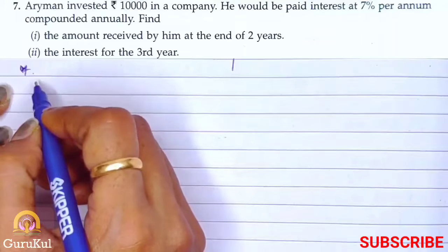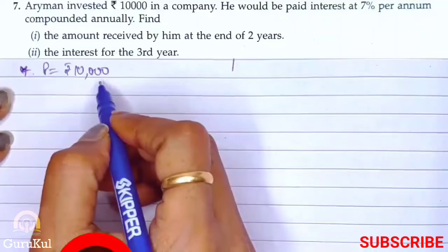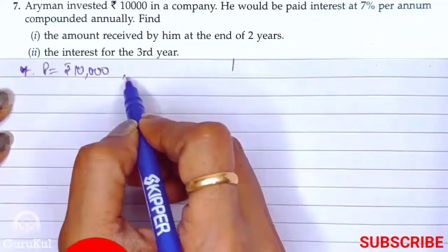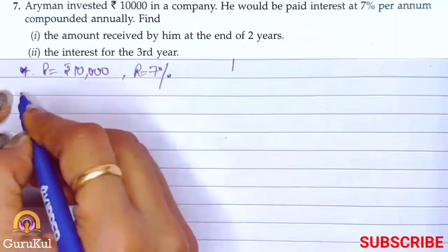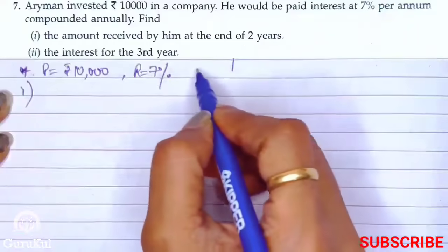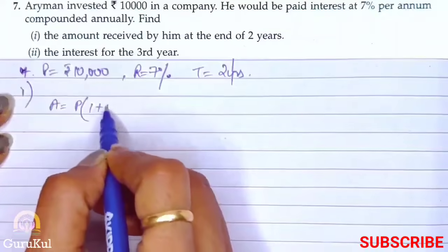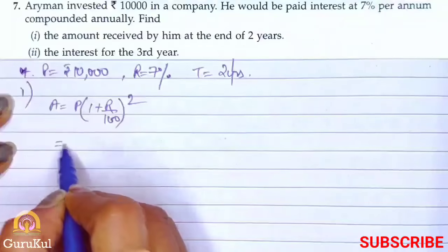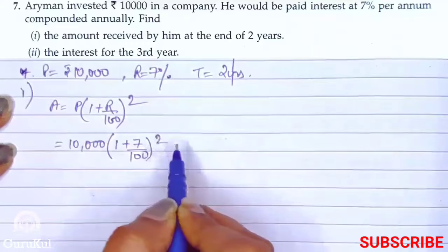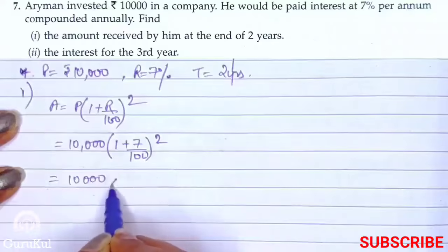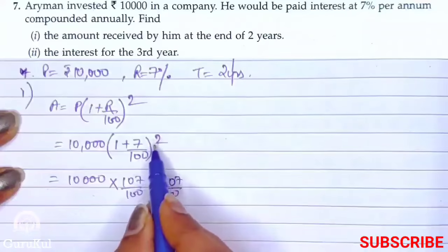Question number 7: A woman invested Rs. 10,000 in a company — so principal is Rs. 10,000 — at 7% per annum compounded annually. In the first part, we find the amount at the end of 2 years. Time = 2 years. Amount = P × (1 + R/100)^2 = 10,000 × (1 + 7/100)^2 = 10,000 × (107/100) × (107/100).